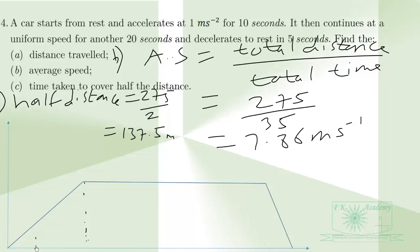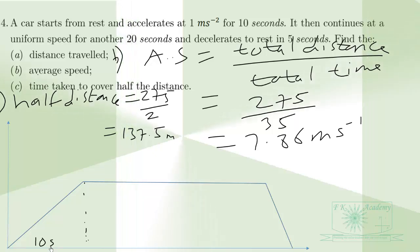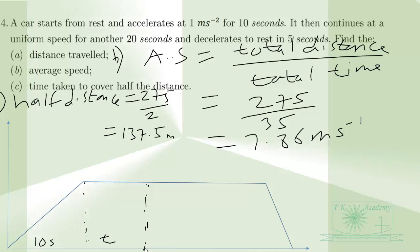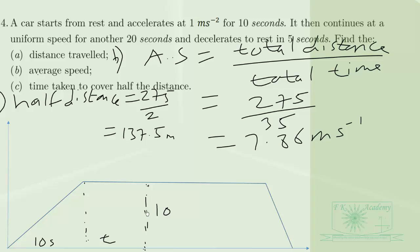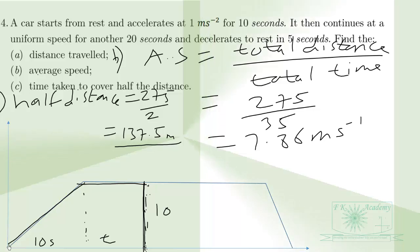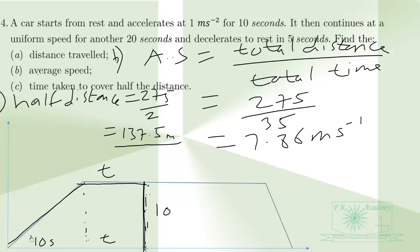We know 10 seconds was taken in the first phase of the journey. Let the additional time needed to reach the half-distance of 137.5 meters be t. The height of the trapezium is 10, and this portion also forms a trapezium. One parallel side is 10 seconds and the other is t seconds.